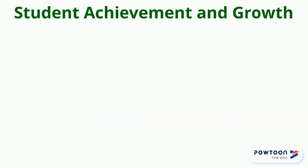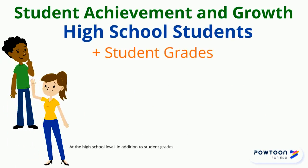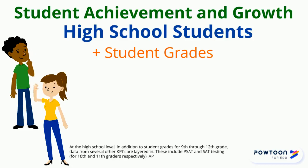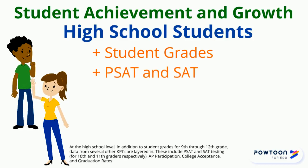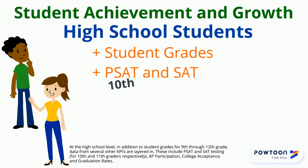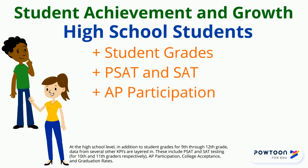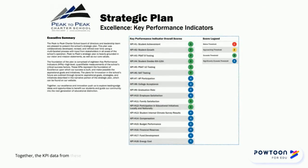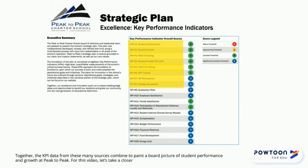At the high school level, in addition to student grades for 9th through 12th grade, data from several other KPIs are layered in. These include PSAT and SAT testing for 10th and 11th graders respectively, AP participation, college acceptance, and graduation rates. Together, the KPI data from these many sources combine to paint a broad picture of student performance and growth at Peak2Peak.